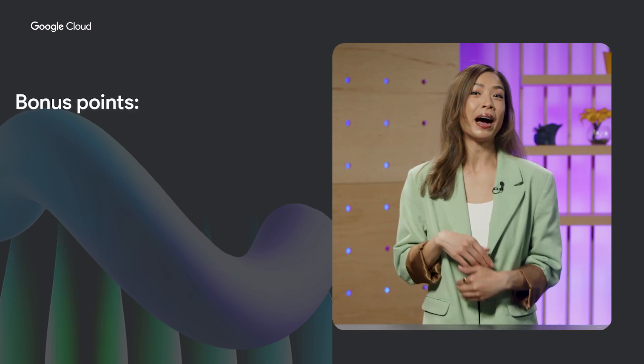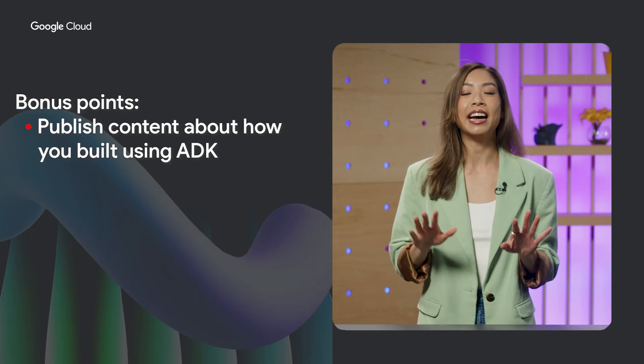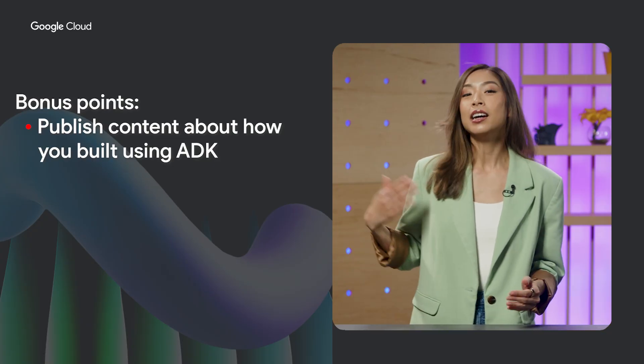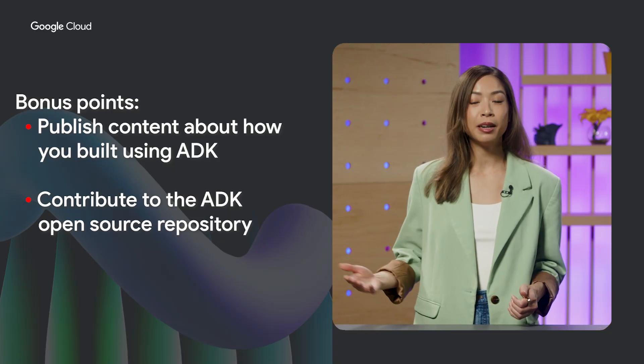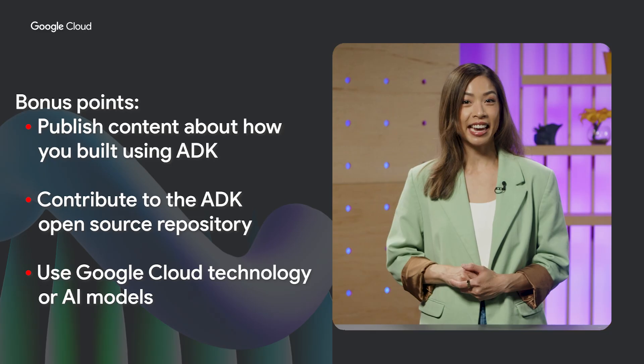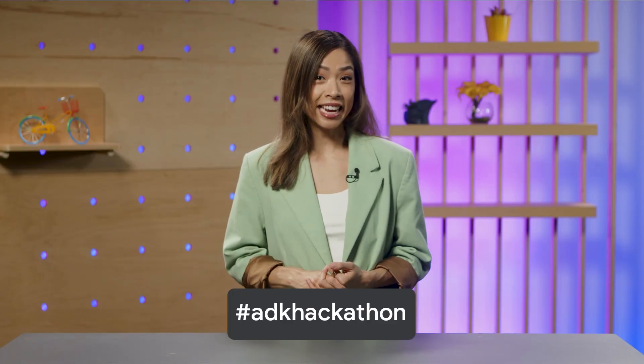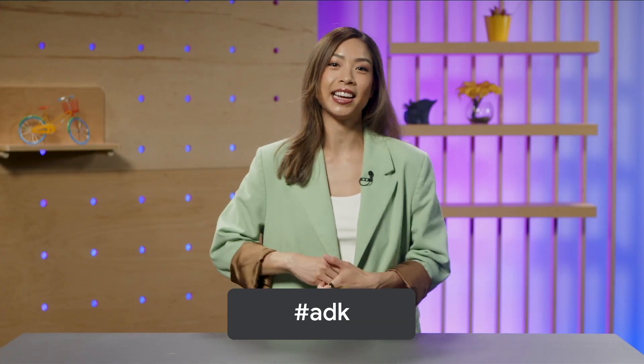This time we have something very, very exciting: bonus points. You can earn bonus points to boost your score by publishing a blog post, video, or podcast about your project and how you used ADK, contributing to the ADK open source repository, or using Google Cloud technologies like deploying your agents to Agent Engine, or by using Google AI models like Gemini. If you're sharing your project on social media, don't forget to tag us and use the hashtag #ADKHackathon and #ADK.